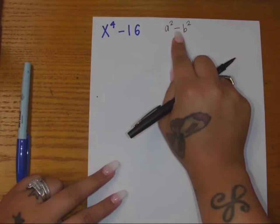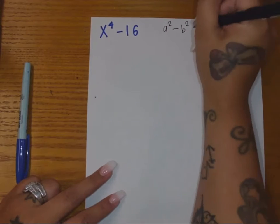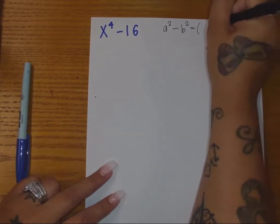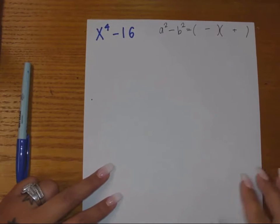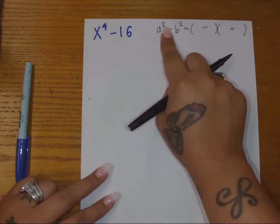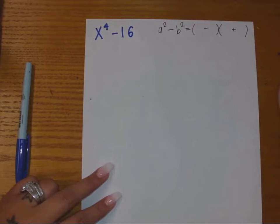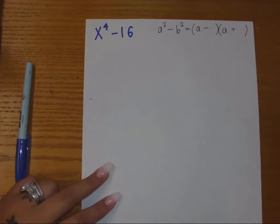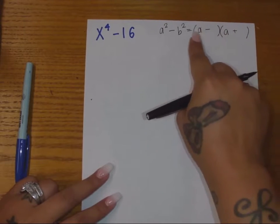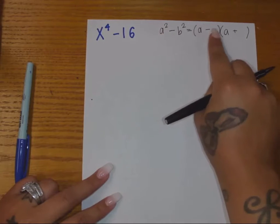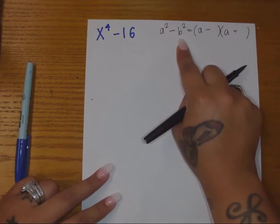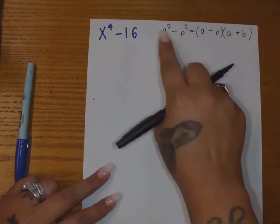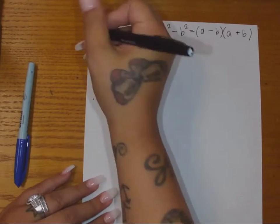So this would be a difference of squares. Remember there's a little template that you can use: two sets of parentheses, one's negative, one's positive, it doesn't matter which one. For a squared, we're actually going to take the square root of it. What times itself equals a squared? That would be a times a. If we did FOIL, a times a would get us back to a squared. And then do the same thing. What times itself would equal b squared? b times b. So we're actually going to use this for this right here.